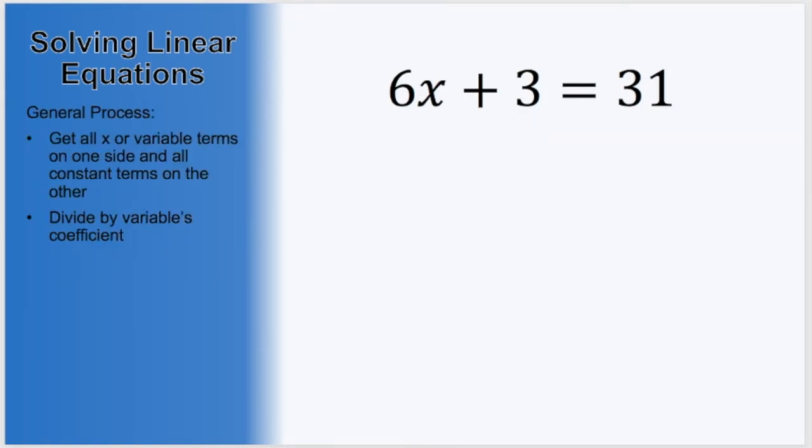Let's take this equation to introduce the process. The key steps are to use addition or subtraction to move your x terms over to one side and the constant terms over to the other side. After that, you will use division or multiplication to cancel any coefficients on the variable.